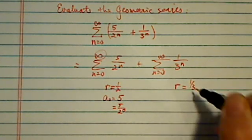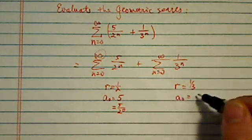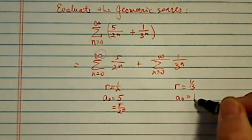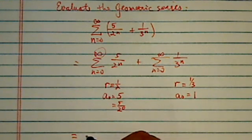Same thing here, r is 1 third, and the a₀ is 1 over 3 to the 0, which happens to be 1. Okay, having had those two, then we can evaluate.